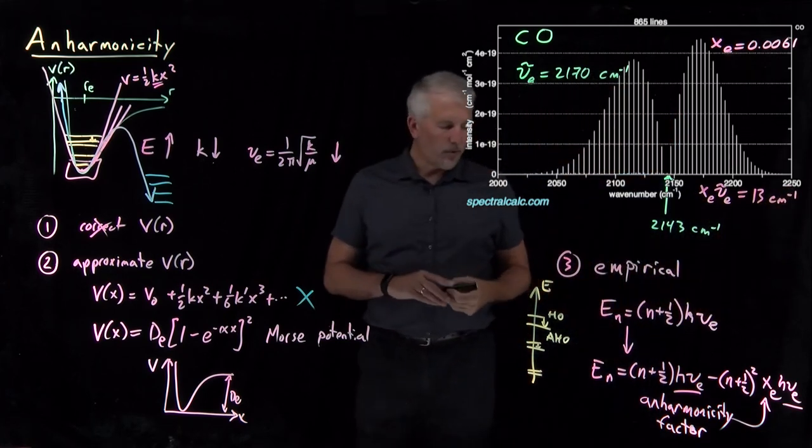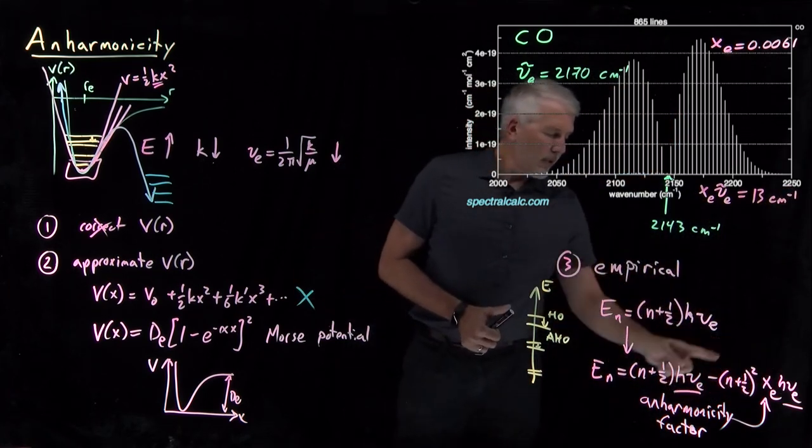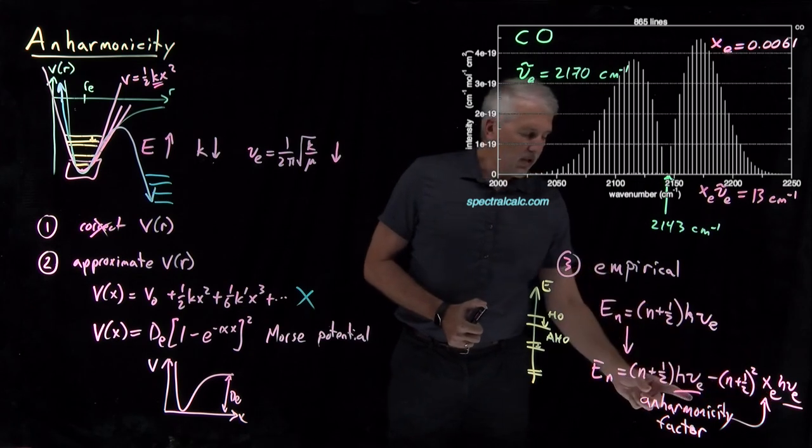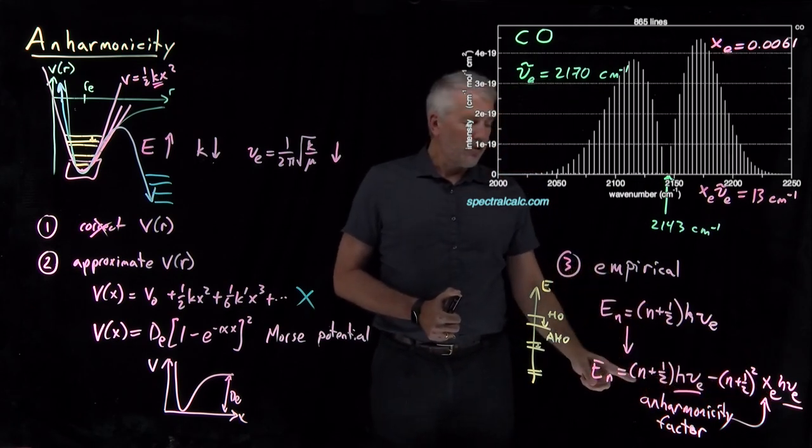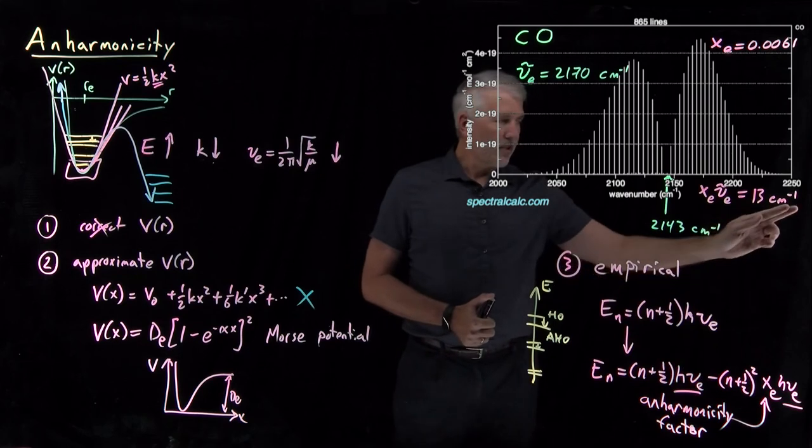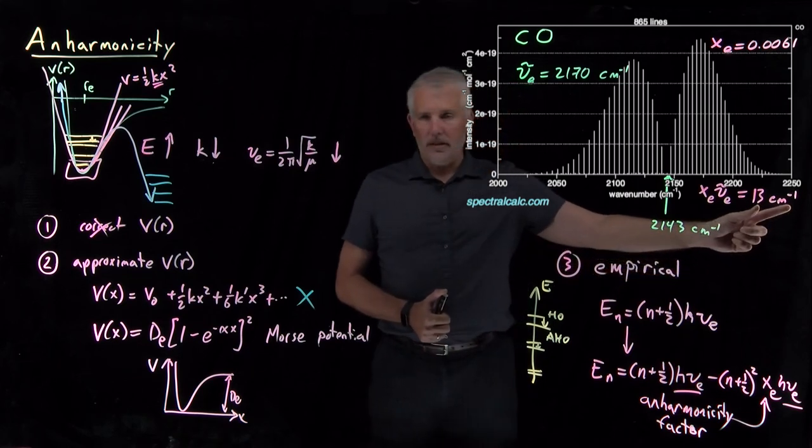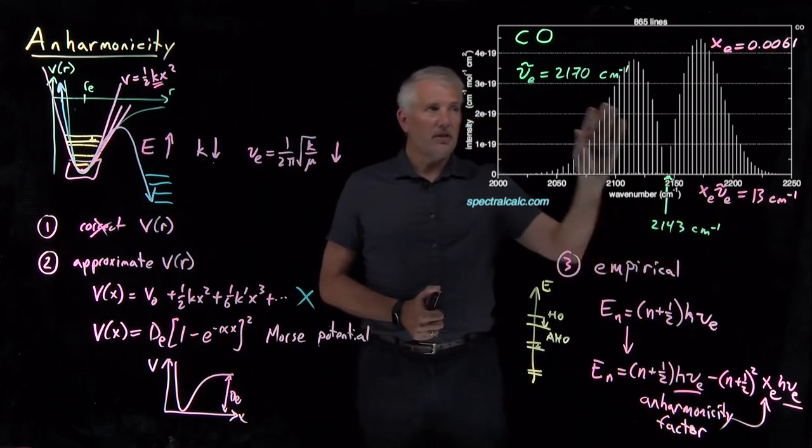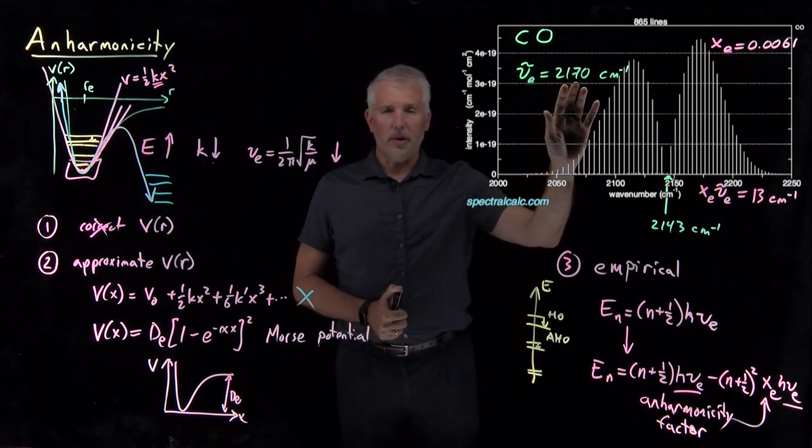We can see that when we throw in the anharmonicity correction to try to correct for the errors in the harmonic oscillator model, that correction is on the order of roughly 10 or so wavenumbers as corrections on top of this 2170 wavenumbers.